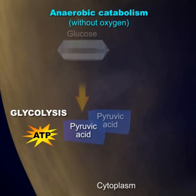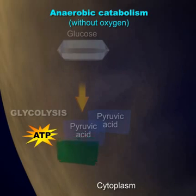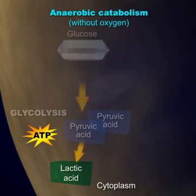In anaerobic catabolism, glucose is broken down through a series of chemical reactions into pyruvic acid and then into lactic acid. Because most of the energy remains within the lactic acid molecule, this totally anaerobic process of glucose catabolism yields little ATP.